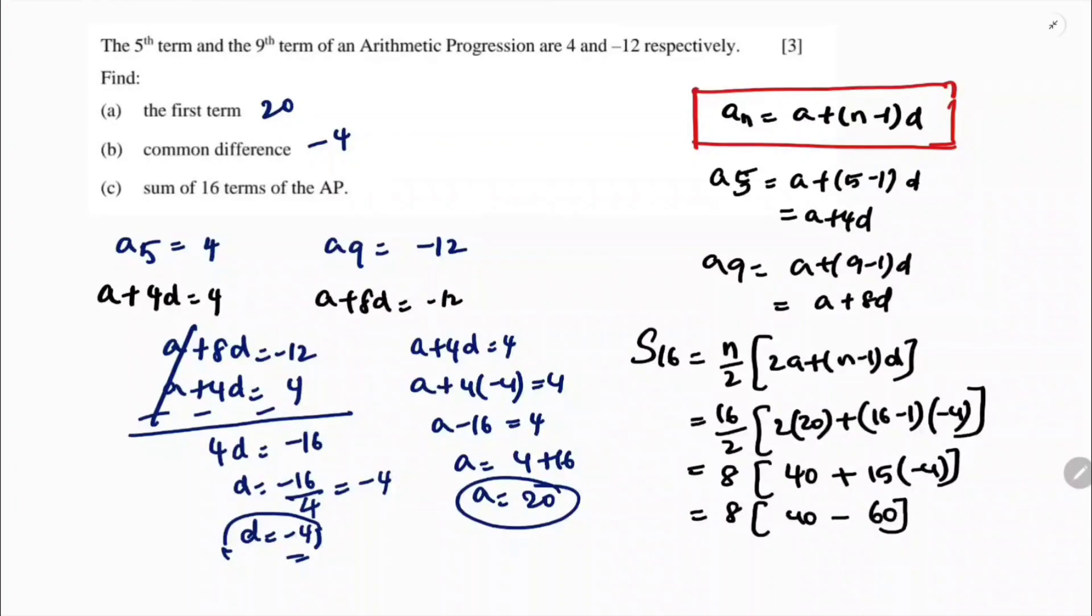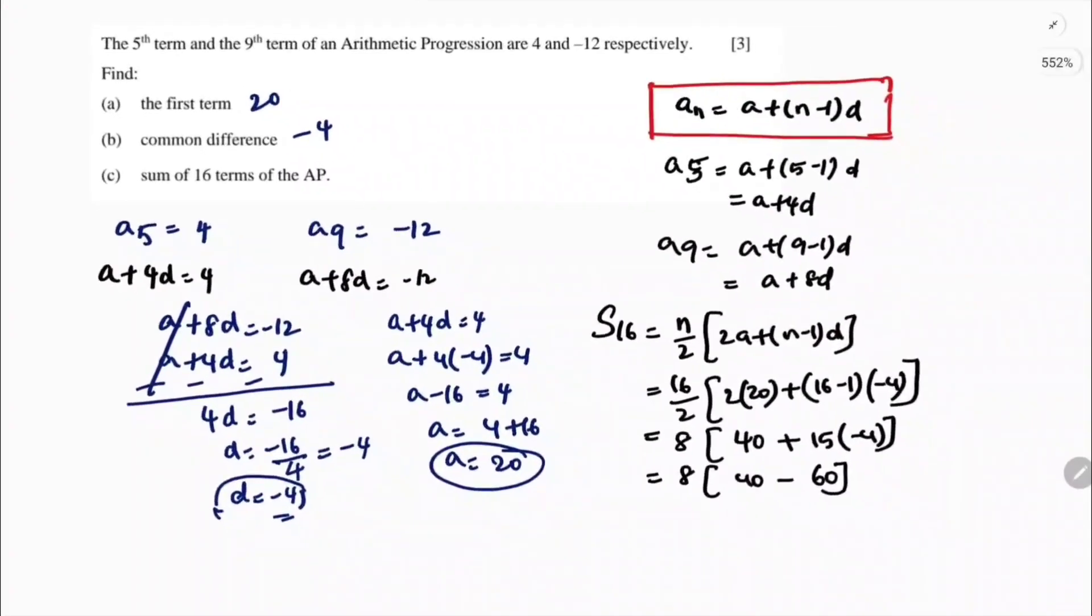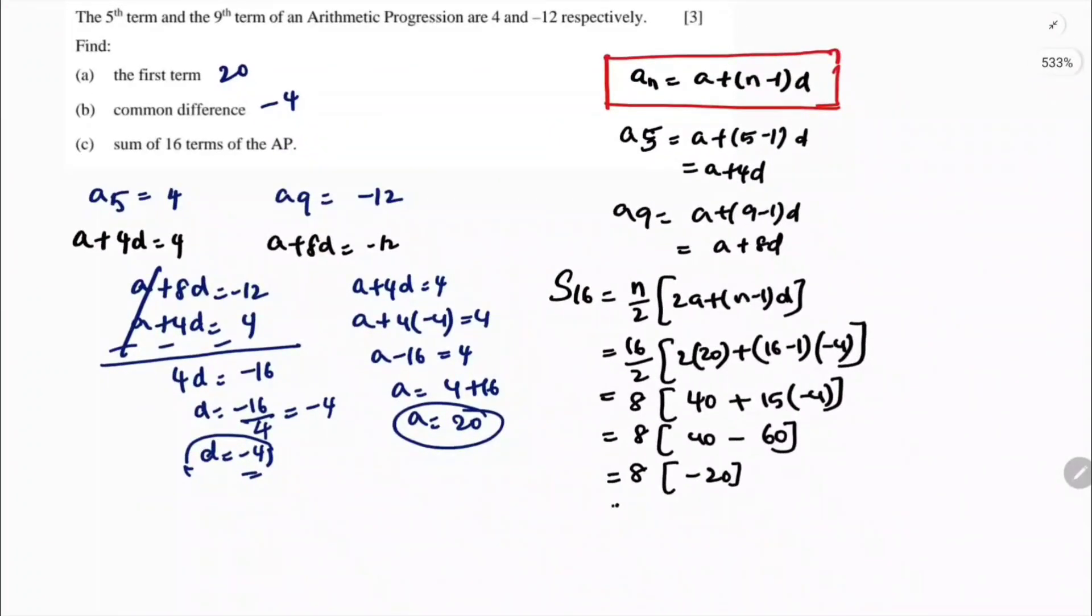8 into 40 minus, 15 times minus 4 is 60. 40 minus 60 is minus 20. So 8 times minus 20 is minus 160. Sum of 16 terms is minus 160.